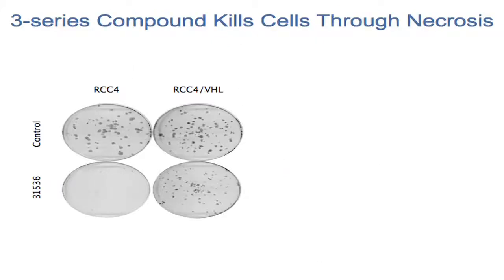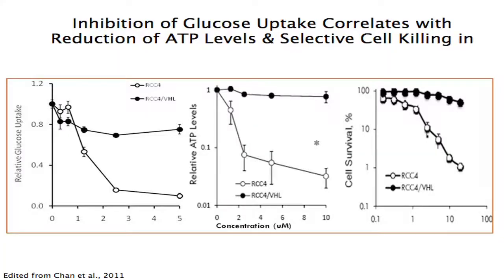The second molecule is STF31. Looking at colony-forming ability, in VHL-deficient cells you can wipe out colonies, and these colonies are dying by a necrotic form of cell death. Looking at changes in glucose uptake: in VHL wild-type cells there is really no change with increasing drug concentration, whereas VHL-deficient cells show a very precipitous drop. ATP levels follow this decrease in glucose — ATP goes down — and clonogenic survival also decreases on a log-log scale, whereas VHL wild-type cells are not affected.